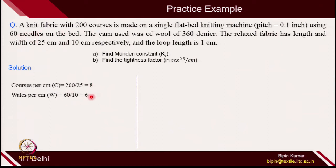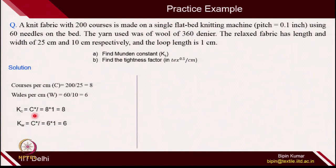You know courses per cm, wales per cm, and loop length. So Kc = courses per cm × loop length = 8 × 1 = 8. Kw = wales per cm × loop length = 6 × 1 = 6. Remember, these constants have no unit — whatever unit you take for L, it is automatically cancelled by C since C is courses per unit length. So there is no unit for Kc and Kw. Ks = Kc × Kw = 8 × 6 = 48. The Munden constant Ks is now known to you.